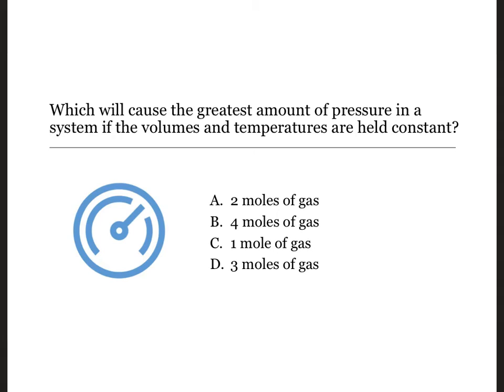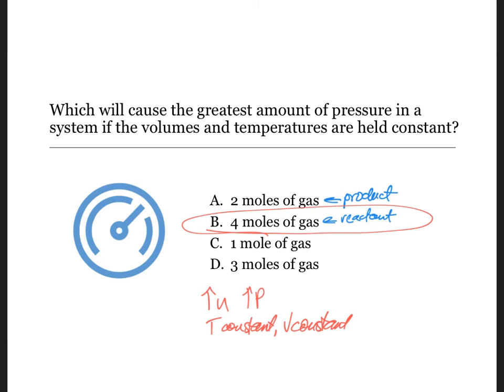Finishing up that nitrogen plus hydrogen gives us ammonia example, we see that we go from four moles of gas on the reactant side to two moles of gas on the product side, and I was hoping that everyone would catch on that when you have an increase in N and temperature is constant and volume is constant, that means that pressure will increase. You're putting more stuff in a constant volume. So the greatest amount of pressure would be from the greatest number of moles of gas.